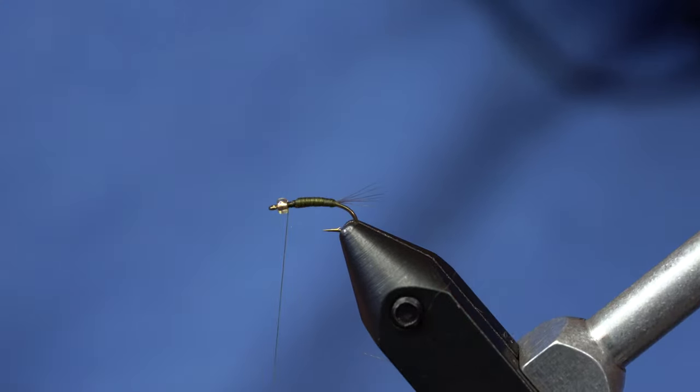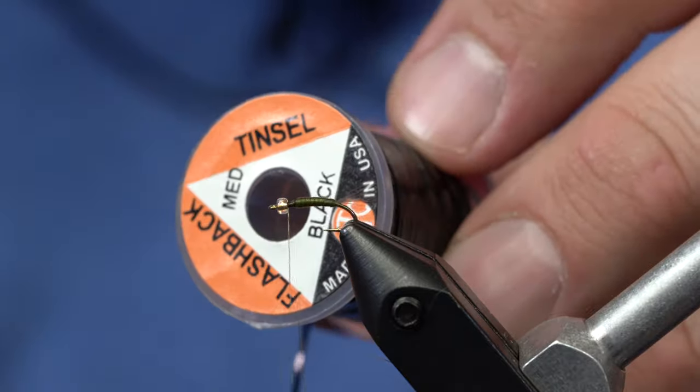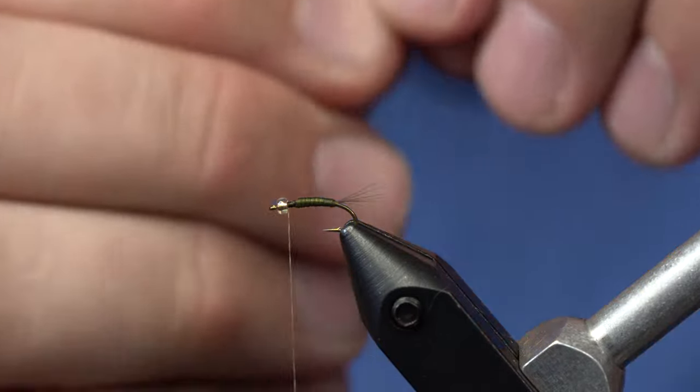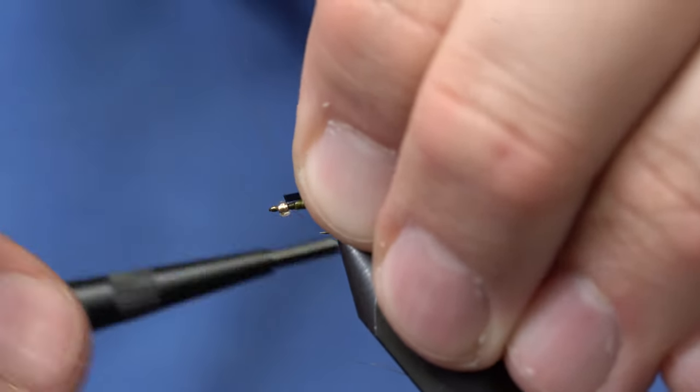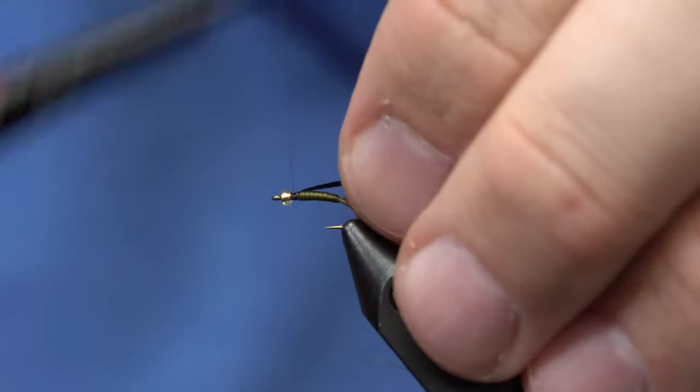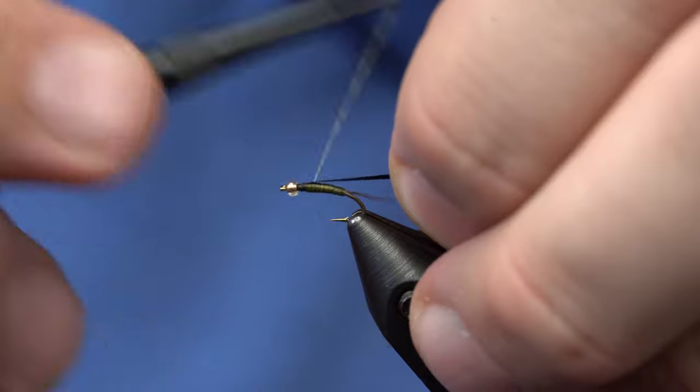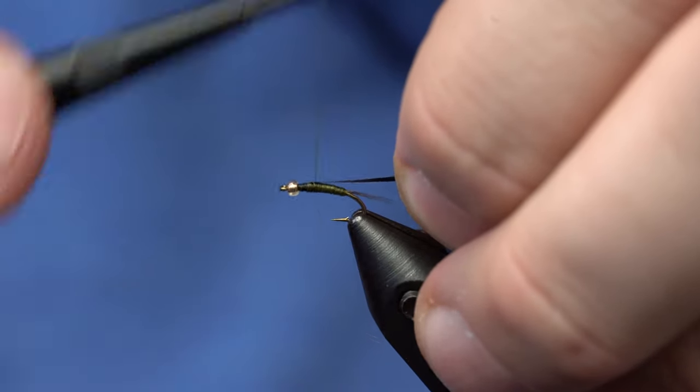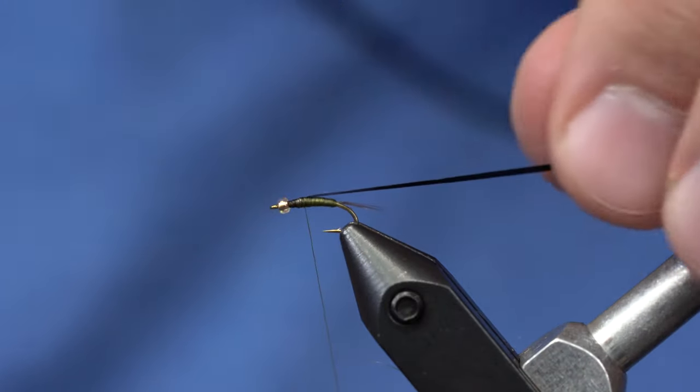So when Betis are about to hatch they get a very dark wing case. So I have just some flashback tinsel in black. This is the medium size. And with this thread it's kind of tough to tie in because the thread is slick and the material is slick so you have to just keep trying until you get it. And that's about how long I want my thorax to be.